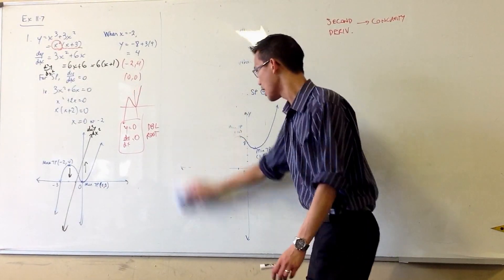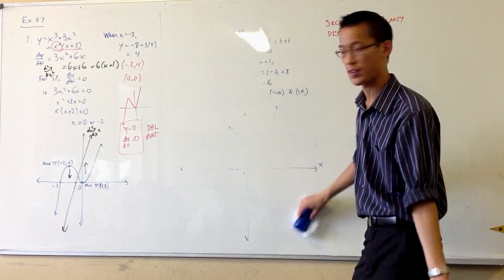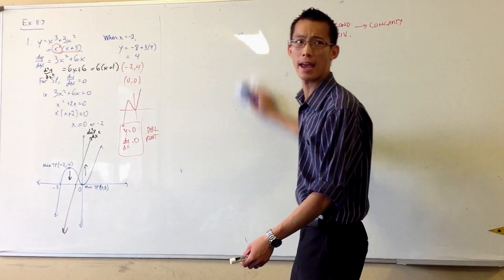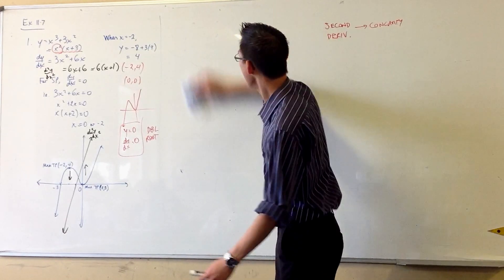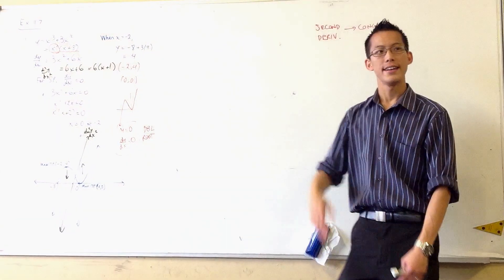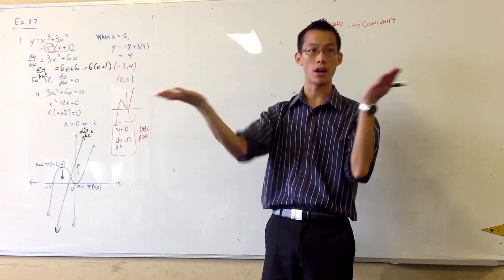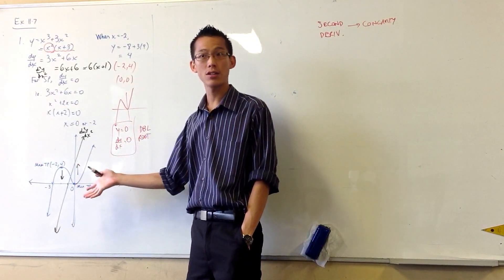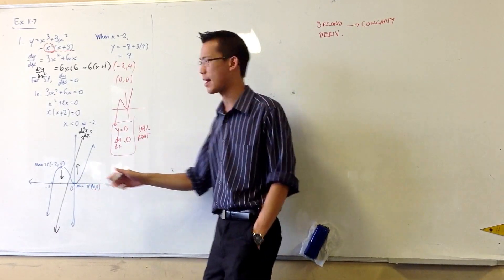So far we've seen, if you wanted to determine the nature of a stationary point, what was the method? We had to draw up a sign table, right? And then we said a turning point, the derivative changes side on either side. The first derivative. But I don't have to do that anymore if I've got the second derivative. Does this make sense? Watch what happens.